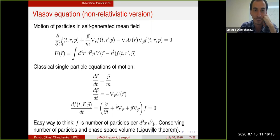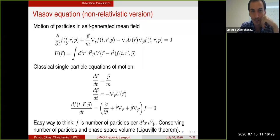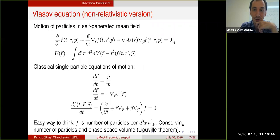If you think of the analytical structure of this equation, the distribution function f depends on time, on coordinates, and on momentum — it is an equation on a seven-dimensional function. It has a self-consistent potential in it: the potential is an integral of the pairwise potential times the distribution function itself. You can see there is a zero on the right side of the equation, which means there are no collisions.